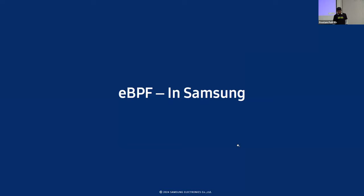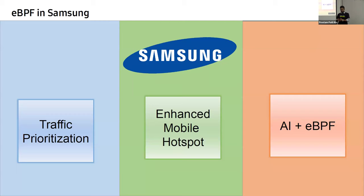Moving to eBPF in Samsung — what we saw previously was in the vanilla Android flavor. We have more customization and user preference solutions for Samsung-specific smartphones. The top three things: first is traffic prioritization, which has been a very well-known use case.